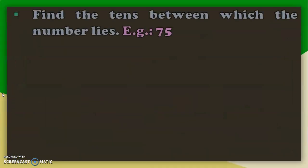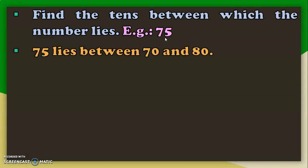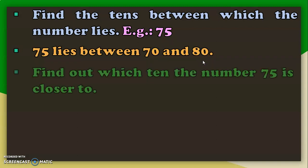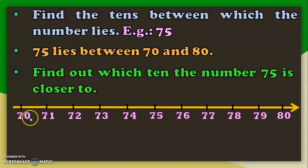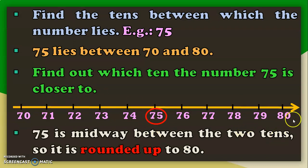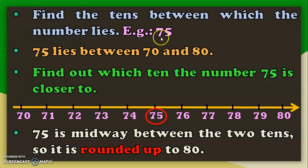Let us do another example. I have taken the number 75. It lies between the tens 70 and 80. To round off to the nearest 10, find out which ten 75 is closer to. Using a number line from 70 to 80, we can see that 75 is midway between the two tens. So, you should round it up to 80. The rule is: whenever the number lies at the midway or above — that is, when the ones digit is 5 or above — it is closer to the upper limit, so you round it up. Rounding 75 to the nearest 10 gives 80.